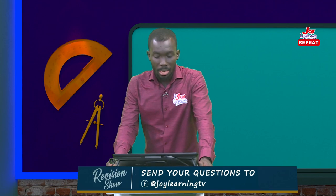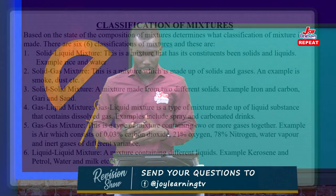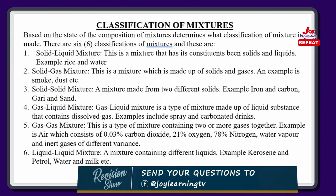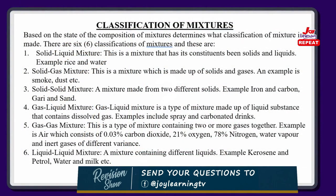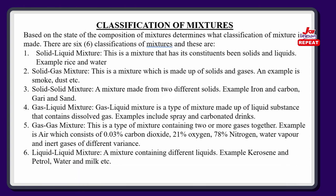Now let's go to the fourth one, which is gas-liquid mixture. A gas-liquid mixture is a type of mixture made up of a liquid substance that contains dissolved gases. A clear example of this is spray — perfume spray. Whenever you spray yourself, your skin gets wet and with time you get the scent, which diffuses and moves around so those close and far away can smell it. Another example is carbonated drinks — the soft drinks we mostly consume.